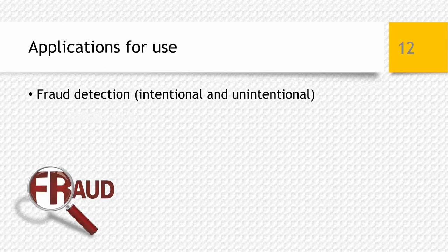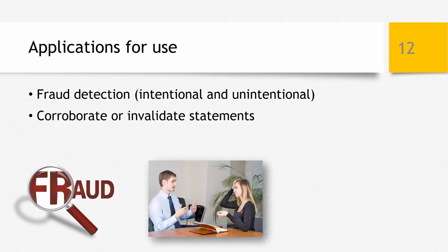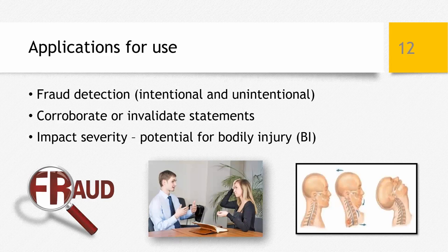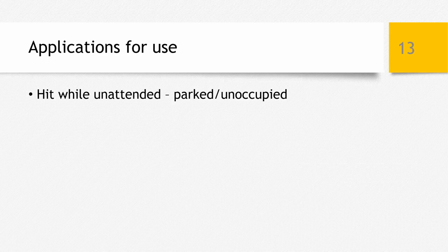Fraud detection is probably the most common use of crash data by insurance companies today, both intentional and unintentional fraud. Vague, misleading statements can be forms of unintentional insurance fraud, and those misleading statements can often be exposed or dispelled with vehicle crash data. Crash data can be used in many scenarios to either corroborate or invalidate statements when other evidence doesn't exist. Impact severity, indicated as delta V, is used to assess the potential for bodily injury in a traffic accident.